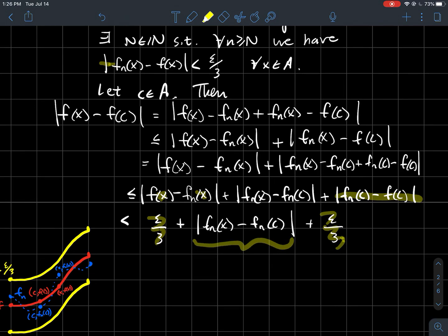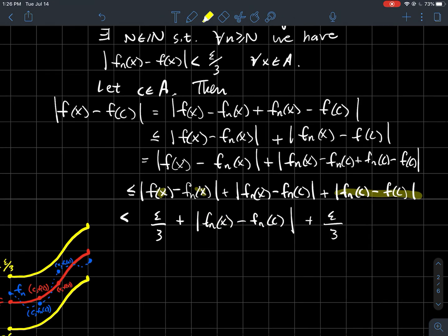Why should the distance between fn of x and fn of c be arbitrarily small? But why? Why can't I argue that I should be able to make this less than epsilon over three? What I should be able to do then is use the fact that the function fn is continuous.